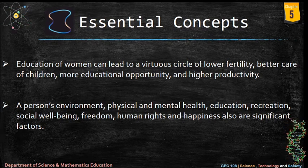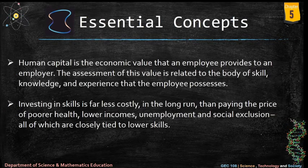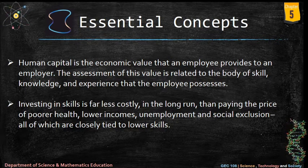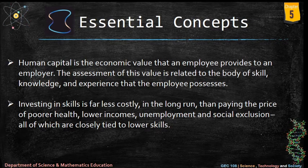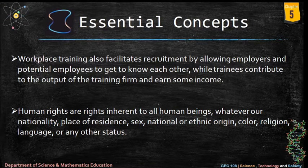A person's environment, physical and mental health, education, recreation, social well-being, freedom, human rights, and happiness are also significant factors. Human capital is the economic value that an employee provides to an employer, related to the body of skill, knowledge, and experience they possess. Investing in skills is far less costly in the long run than paying the price of poorer health, lower incomes, unemployment, and social exclusion — all of which are closely tied to lower skills. Workplace training facilitates recruitment by allowing employers and potential employees to get to know each other while trainees contribute to output and earn some income.